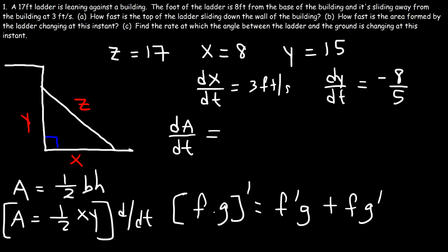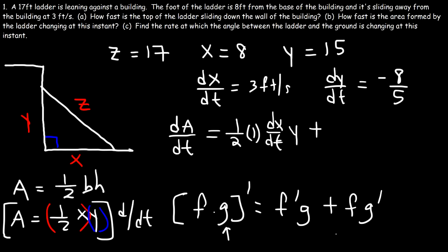Using the product rule — where the derivative of f times g equals f-prime times g plus f times g-prime — let f equal one-half X and g equal Y. So f-prime is one-half times dx/dt, and g-prime is dy/dt. Therefore dA/dt equals one-half times dx/dt times Y plus one-half times X times dy/dt.